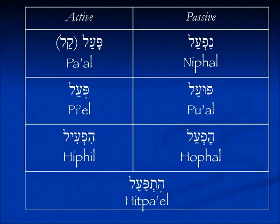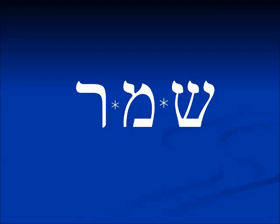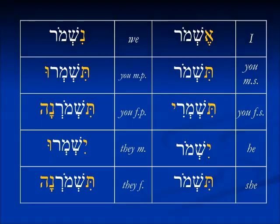We're starting today with the Pa'al, or the Qa'al. For our example word we have the root Shamar — Shin, Mem, Resh — which in the Pa'al means 'to guard' or 'to keep.' Here is the full conjugation: Eshmur (I will guard), Tishmur (you masculine singular — remember this form is the same as 'she'), Tishmuri (you feminine singular), Yishmur (he will), Nishmur (we will), Tishmuru (all y'all will), Tishmurna (second and third person feminine plural), and Yishmuru (they masculine will guard).